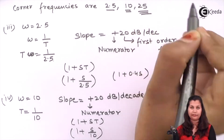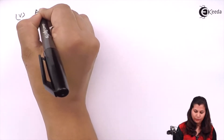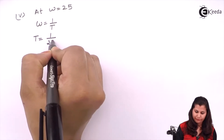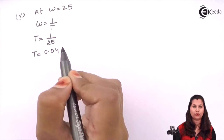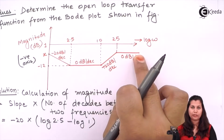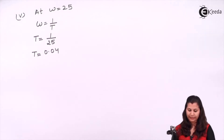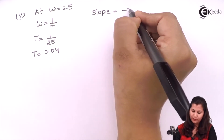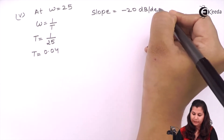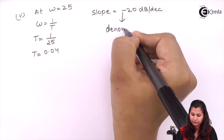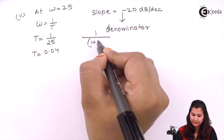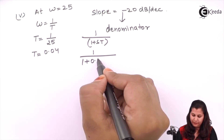At ω = 25, the time constant T = 1/25 = 0.04. The slope was plus 20 dB per decade and now becomes 0 dB per decade, so the slope change is minus 20 dB per decade. Negative means it is in the denominator, and first-order, so this factor is represented in the form 1/(1 + sT), giving 1/(1 + 0.04s).